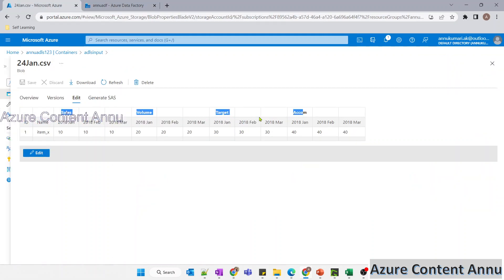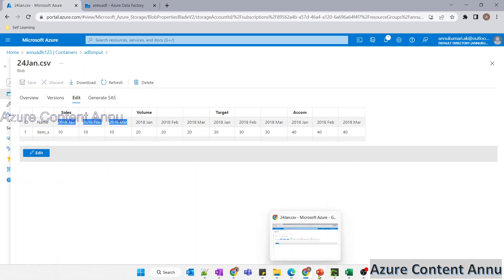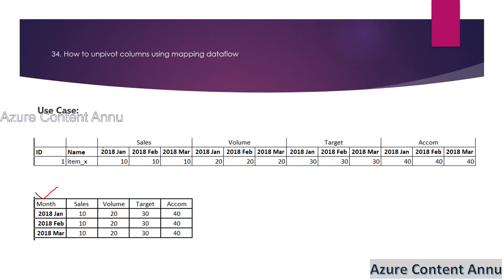The actual headers are sales, volume, target, and accommodation. Our need is to convert these column names into row values, as we have seen in the presentation. Basically, we need to consider the second row as the header instead of the first row, so we need to do something to skip this first row.